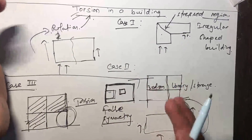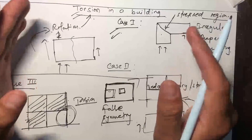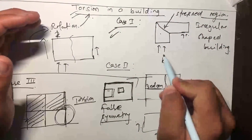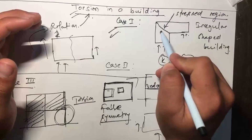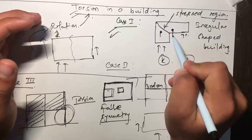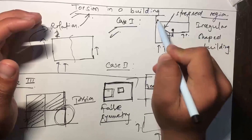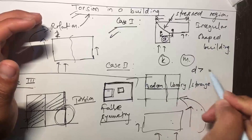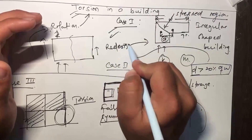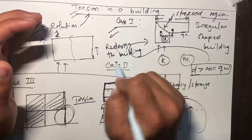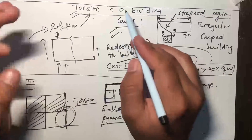To know whether a building might fail in torsion, significant torsion is defined by the condition where the distance between the story's center of rigidity (K) and center of mass (M) exceeds 20% of the building width (W). If this distance d is greater than 20% of W, the building must be redesigned. You should always check the distance between the center of rigidity and center of mass when designing a building.